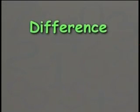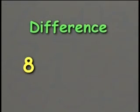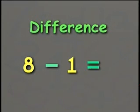What is the difference between 8 and 1? To find the difference, we have to minus the smaller number from the bigger number. 8 minus 1 equals 7. So, the difference between 8 and 1 is 7.